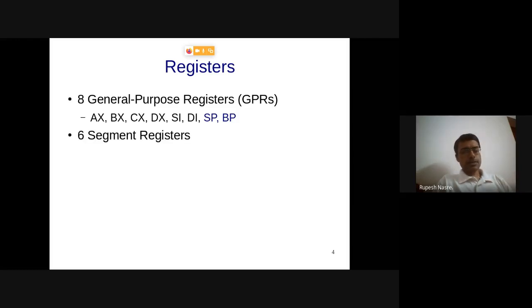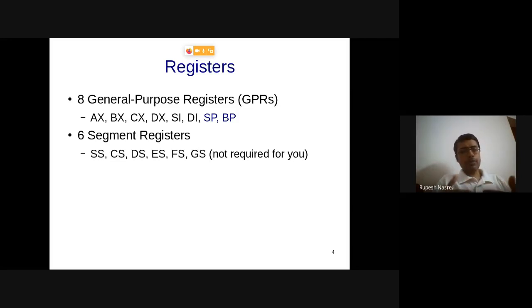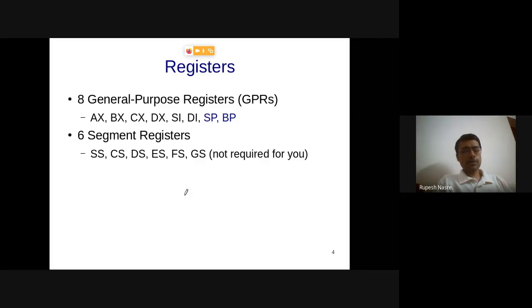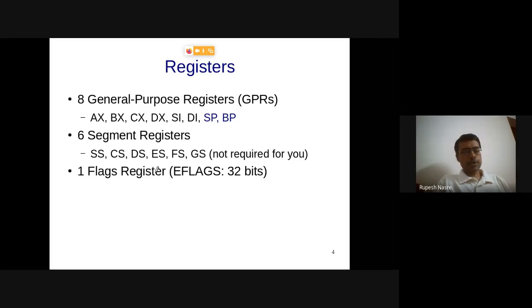Apart from general-purpose registers, there are six segment registers. There are different segments: stack segment, code segment, and data segment. ES, EF, and G are called extra segments, sometimes used but not always. Earlier we needed to worry about these, but now less so.